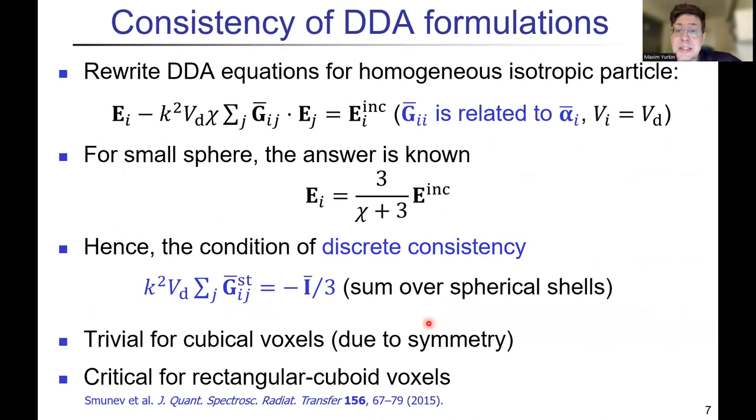The first important concept is the consistency of the DDA formulation. If you consider a small sphere, then you know the solution inside it. If you plug it into the DDA equations, we get some very simple sum rule, which I'll call discrete consistency, that if we sum the static green tensor over the whole grid, we should get this simple one-third term. This is actually not very interesting for cubical voxels because it's automatically satisfied for almost all formulations based on symmetry.